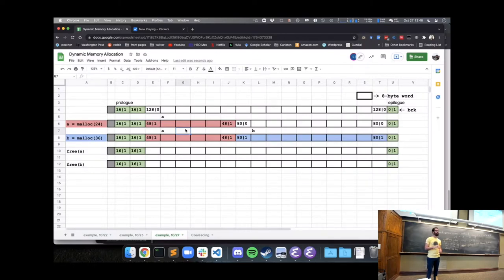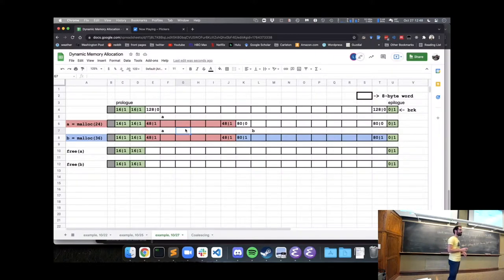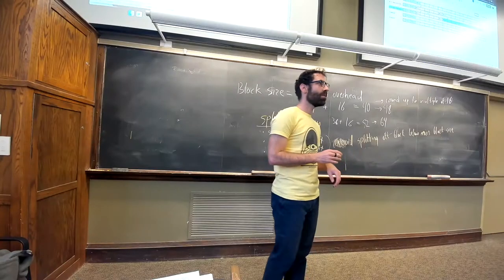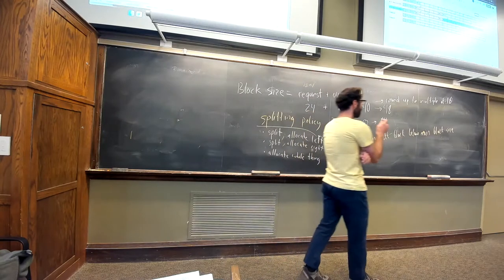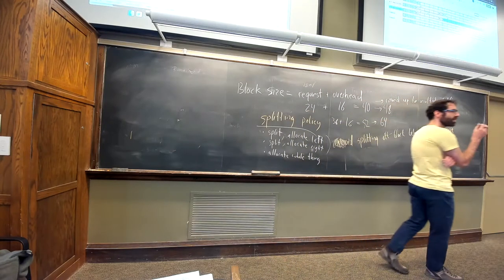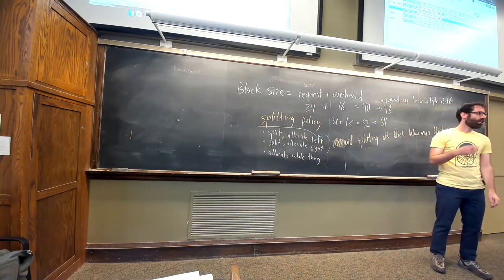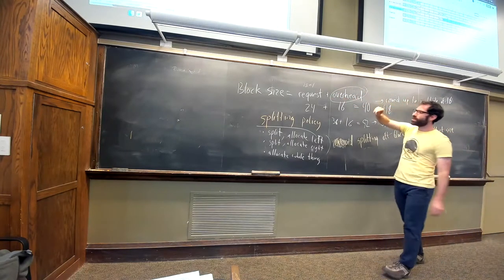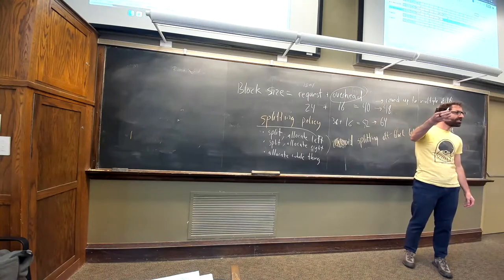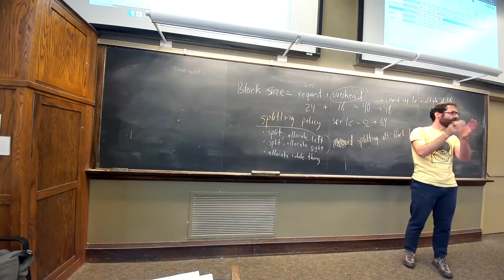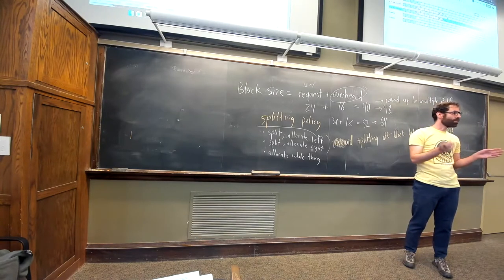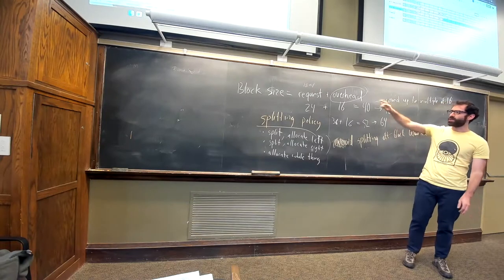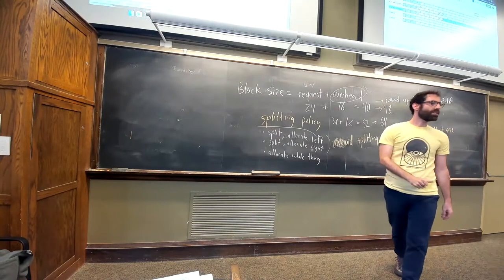Our minimum block size is our overhead — which is 16 — plus 16, because we need a payload that's a multiple of 16. So under this scheme, our minimum size is 32.